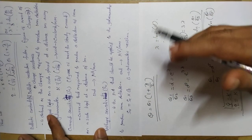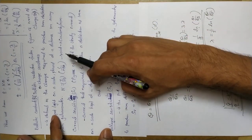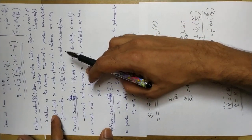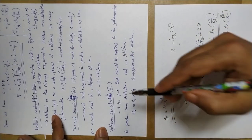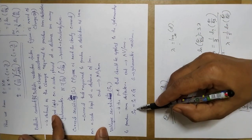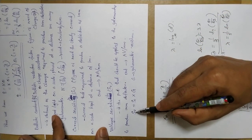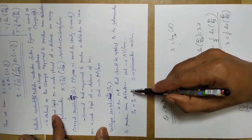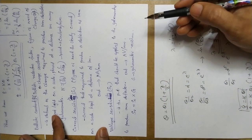We can similarly define voltage sensitivity as the potential difference that should be applied to the galvanometer to produce one millimeter deflection. Voltage sensitivity equals current sensitivity multiplied by G, the galvanometer resistance.